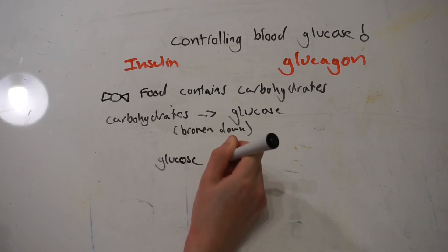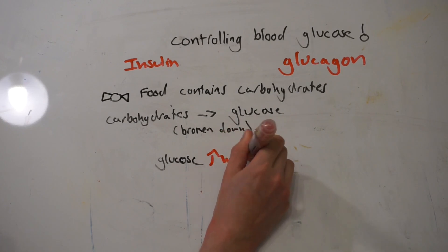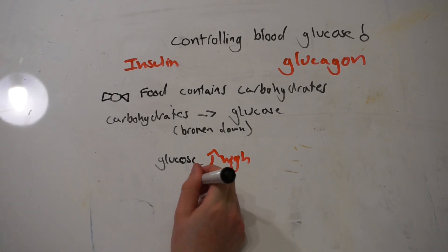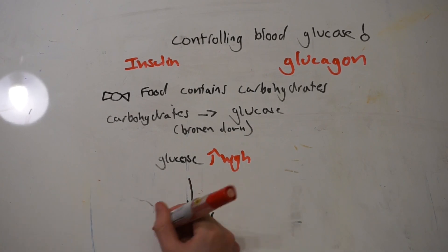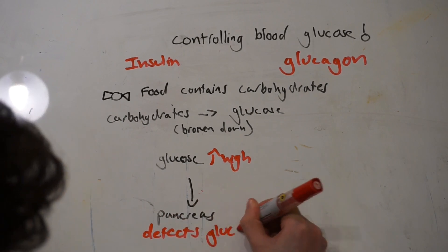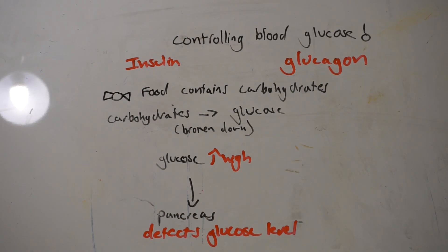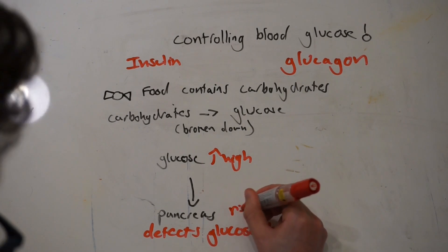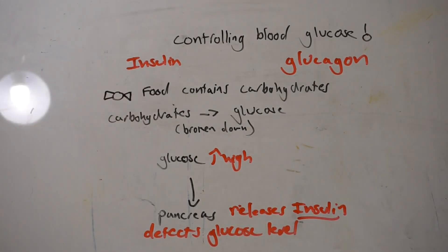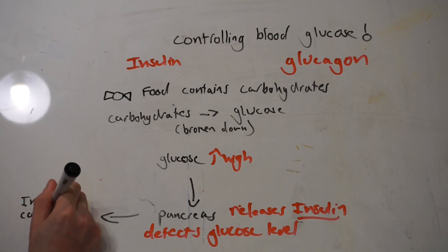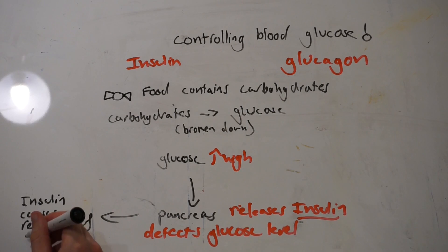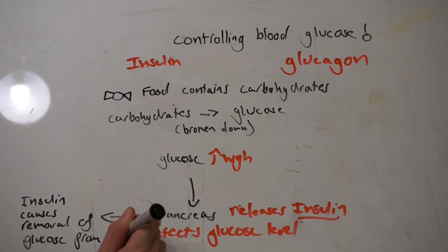Let's look at what happens when our blood glucose level is too high — such as after a big meal of lots of sugar. If the blood glucose concentration is very high, the pancreas will detect this because it constantly has blood circulating through it and is able to monitor glucose levels. If it sees that the glucose level is too high, it secretes insulin. This insulin causes your cells to take up more glucose from the blood and take it into liver and muscle cells, where it's converted into glycogen — a storage molecule. Once this is stored, your blood glucose levels go down and you've achieved equilibrium again, returning to the homeostatic norm.